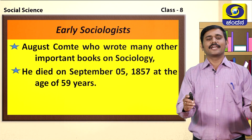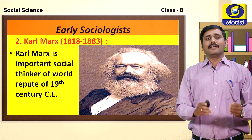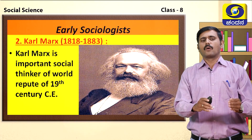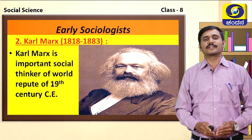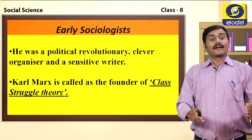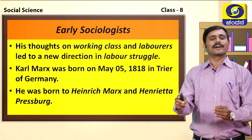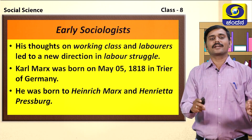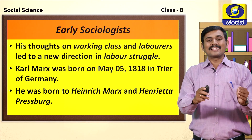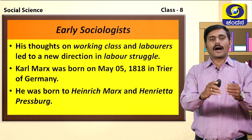Followed by Auguste Comte, we have Karl Marx, who lived between 1818 to 1883. He was one of the very prominent and important social thinkers of the 19th century. He was a politically revolutionary, a clever organizer, and a sensitive writer. Karl Marx is called the founder of the Class Struggle Theory. His thoughts on the working class and laborers led to a new direction in the labor struggle, and laborers applied his ideology widely during the 18th century.